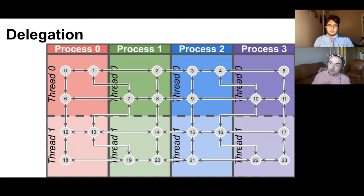The second thing that you need to provide the library is a delegation rule. And this is just a mapping that tells you how to assign simulation elements to processes and threads that are available at runtime. So for example, here, simulation elements zero, one, and six are all delegated to process zero, thread zero.